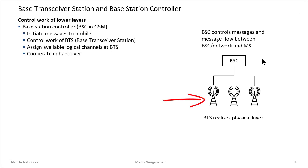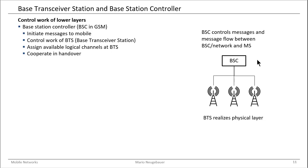The base transceiver station is almost like an antenna — an antenna with digital signal processing. This antenna is able to receive the signals, decode them on the physical layer, and forward the packets to the base station controller. The base transceiver station does not actually decide which mobile station to allow access; it just forwards the relevant packets to the base station controller. The base station controller then tells the base transceiver station to allow the mobile station to occupy the channel, occupy a burst, and the mobile station gets the acknowledgement and can make the call or transmit data.